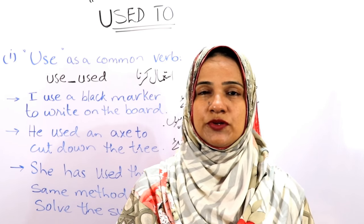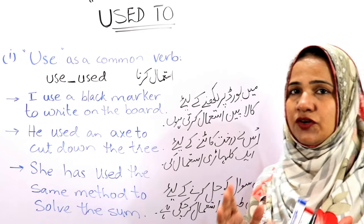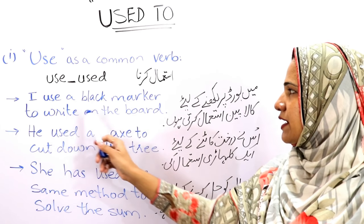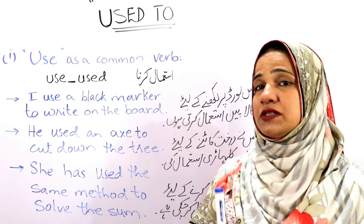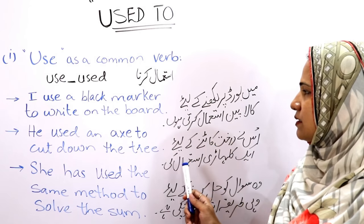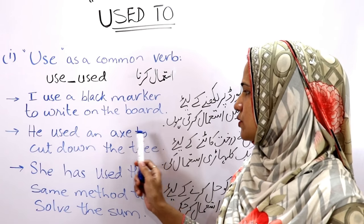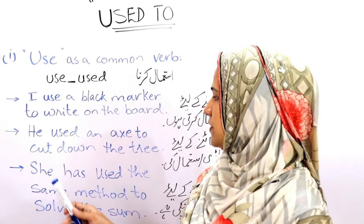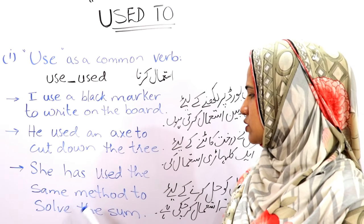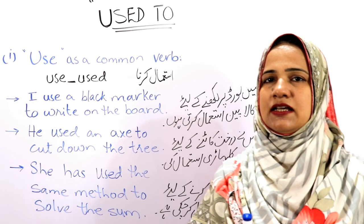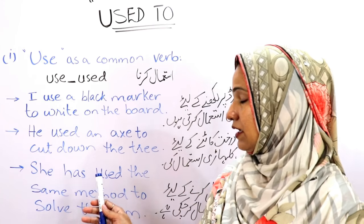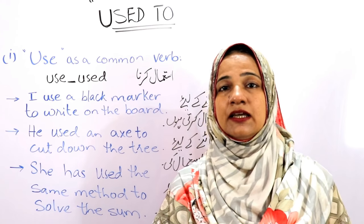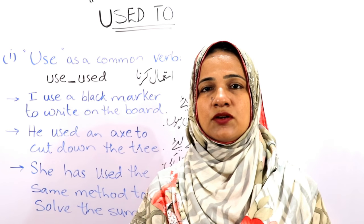I have written three sentences on the board to explain the meaning of this word. The first one: 'I use a black marker to write on the board' — present tense. 'He used an axe to cut down the tree' — past tense. 'She has used the same method to solve the sum' — past participle form used in present perfect tense. That was the simple usage of the verb 'use.'